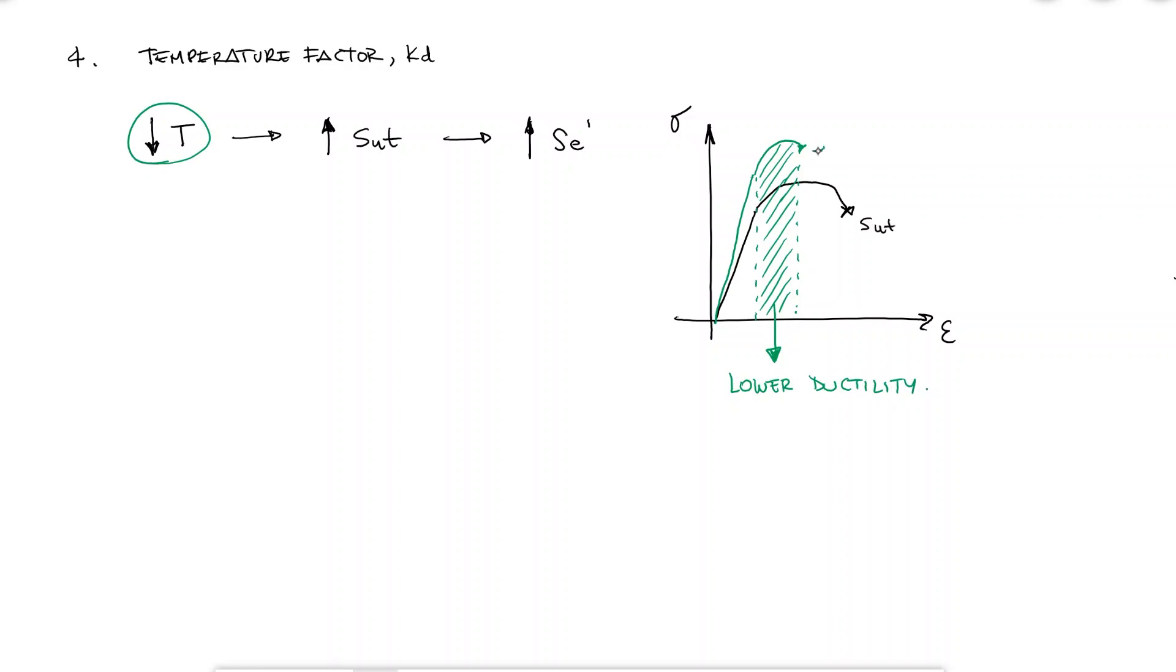The temperature factor Kd is a complex one. For many materials, decreasing temperature may actually increase the ultimate and yield strengths, but their ductility is vastly reduced. Since endurance limits are usually linked to the ultimate strength, we would think that low temperatures have a positive effect on fatigue, but as we saw with fracture toughness a couple videos ago, and the lower ductility due to lower temperatures, smaller crack lengths would be required for rapid crack growth to fracture.